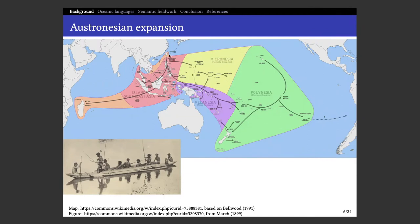From then on, you can see different arrows on the map showing different waves of migration — going south towards Indonesia, eventually also towards Madagascar, and then spreading out gradually in a stepwise fashion throughout the whole Pacific Ocean, reaching as far as the eastern islands near Chile. And all these languages are related — it's pretty amazing.